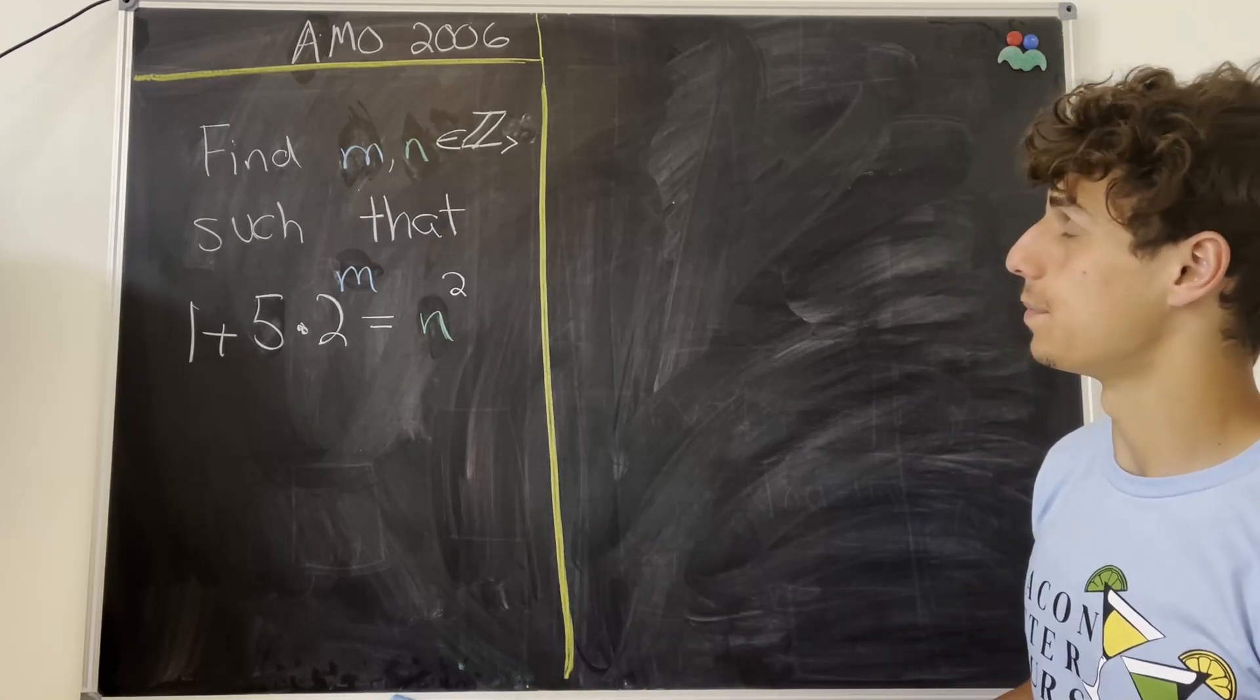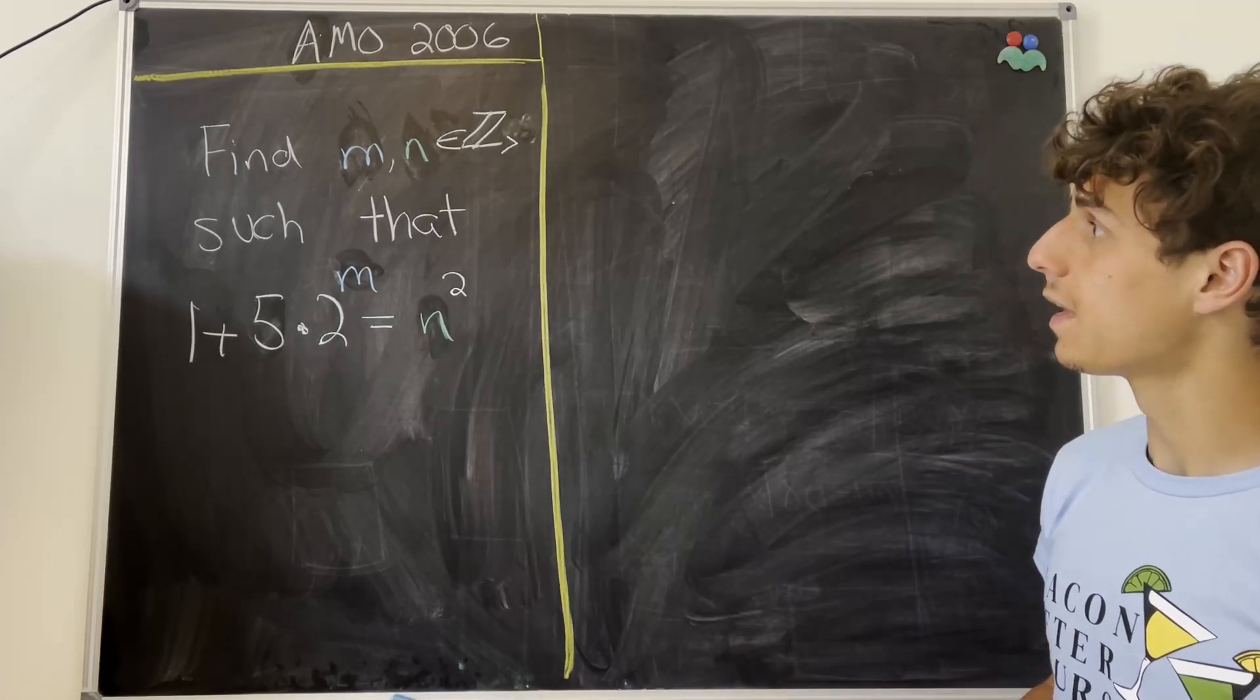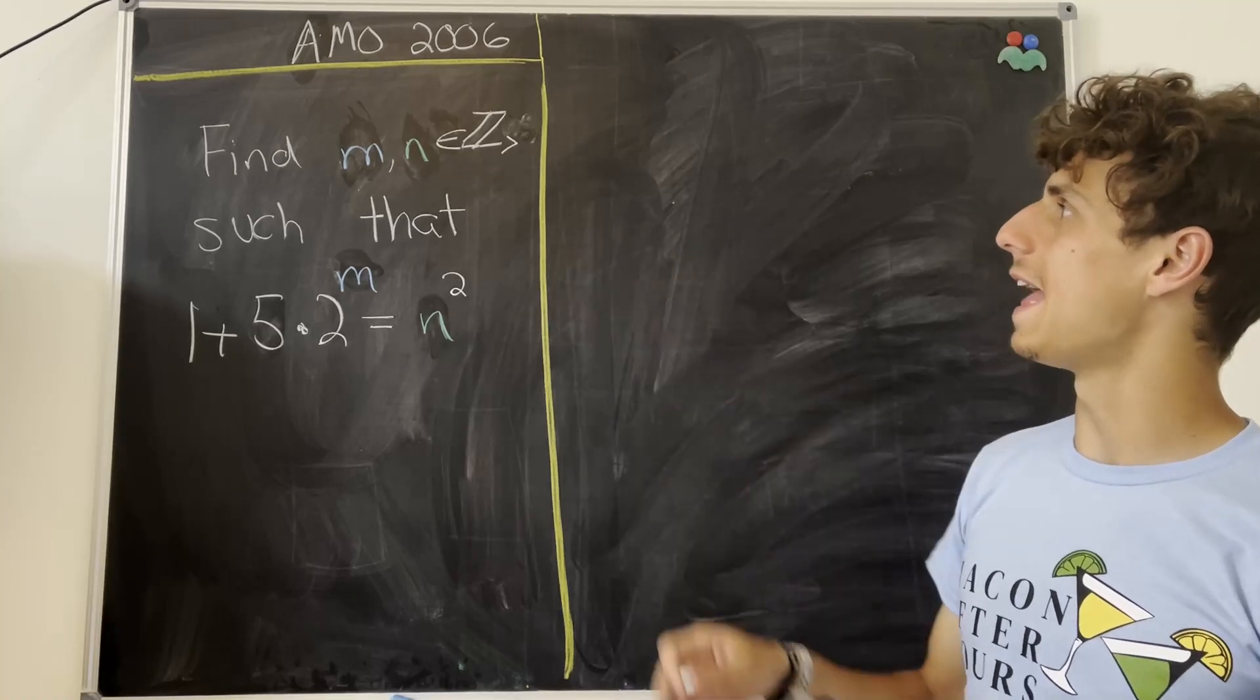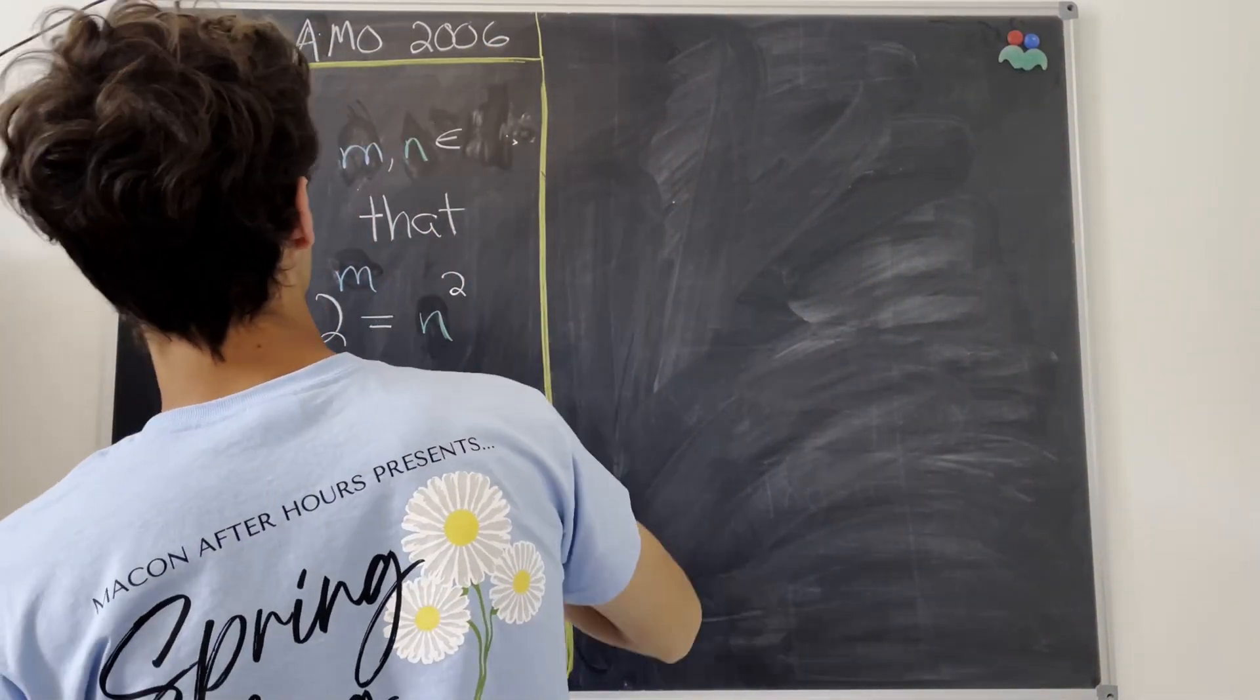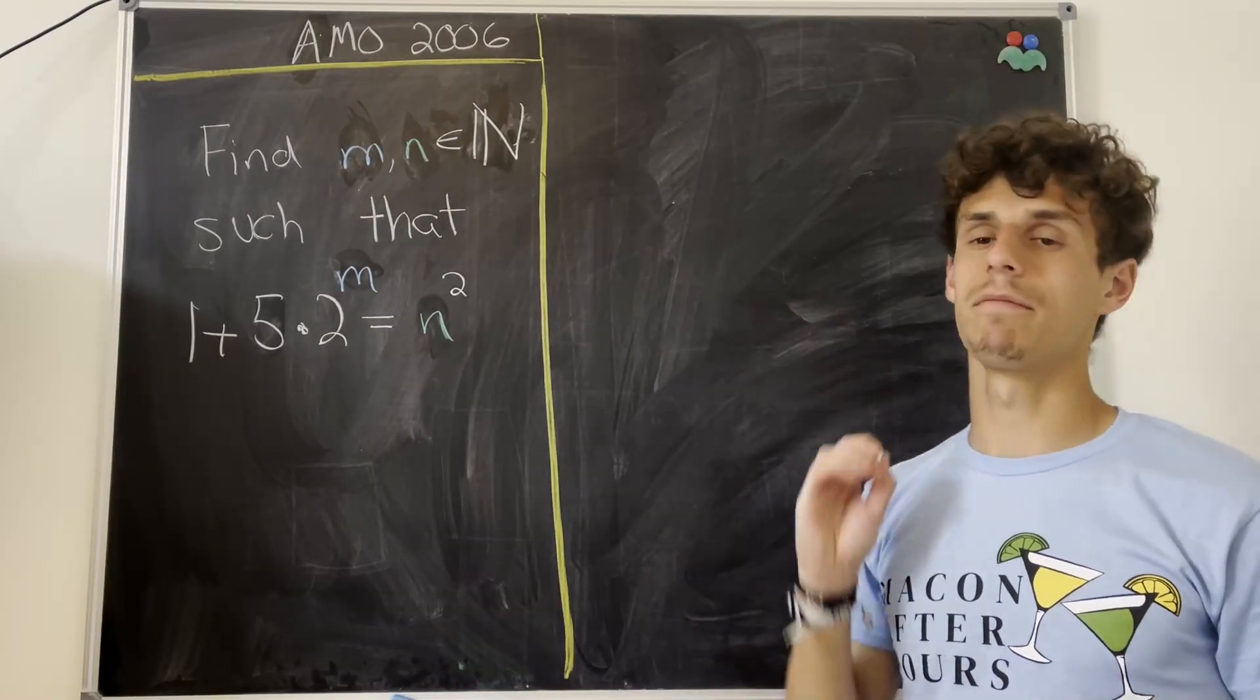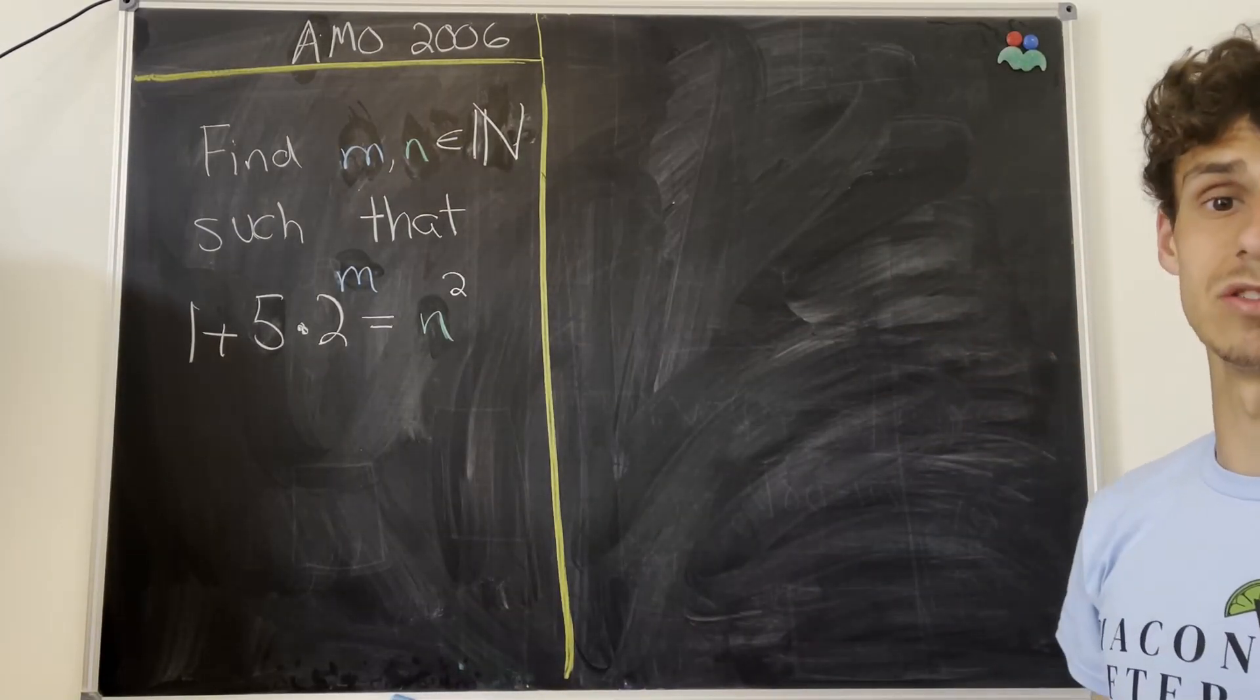Here I have a problem from the Australian Math Olympiad from the year 2006, and it asks us to find m and n in the positive integers, or I could say the natural numbers, such that 1 plus 5 times 2 to the mth power is equal to n squared.